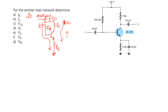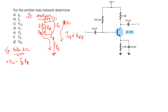We apply KVL in order to find ICQ and VCEQ. Considering the input side first: starting from plus VCC, the polarity across RB is plus to minus, so we get minus IB·RB. Next, VBE is plus to minus, giving minus VBE. The current through RE is IE, so minus IE·RE equals zero.